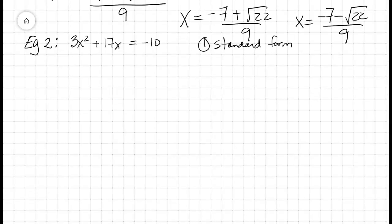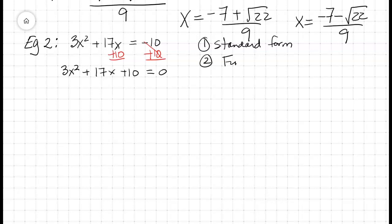Okay, it's time for example 2. Is that in standard form? We have 3X squared plus 17X equals negative 10. The answer is it's not. So we're going to add 10 to both sides of the equation in order to put that in standard form: 3X squared plus 17X plus 10 equals 0. What's next? We need to find A, B, and C. A is equal to 3, B is equal to 17, and C is equal to 10.